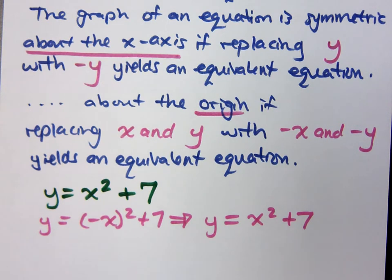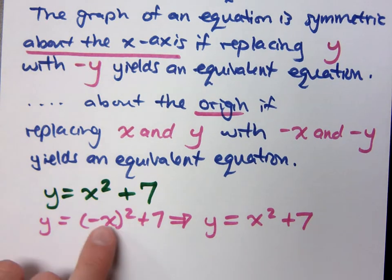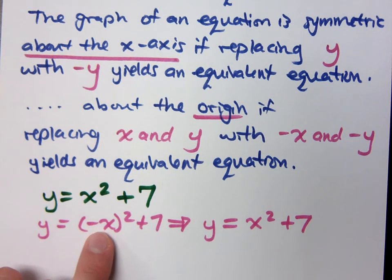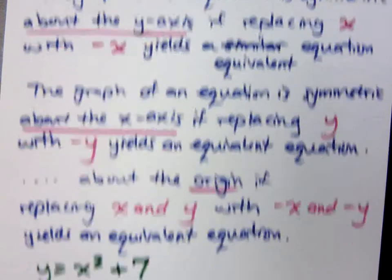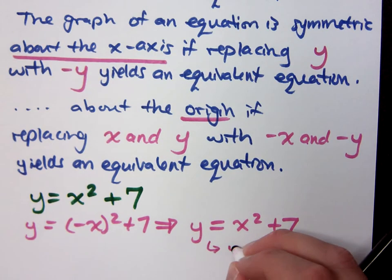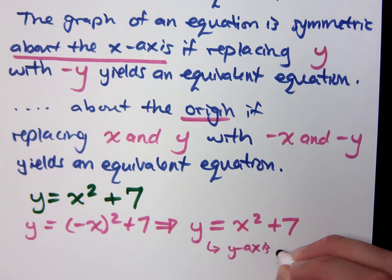See, origin symmetry is if you replace x and y at the same time with negative x and negative y. I replaced x with negative x. I have y-axis symmetry. So the conclusion here is I have y-axis symmetry.